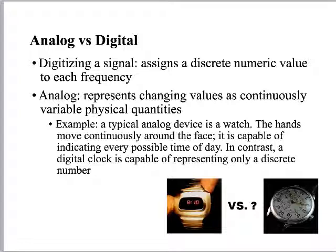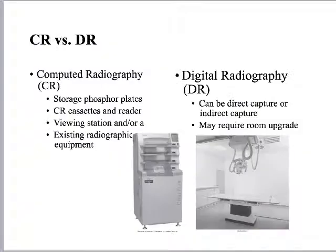Another way to think about digital versus analog: think about Daft Punk, a band that makes electronic music, versus Led Zeppelin, who would plug their guitars into their amps making analog music. There was nothing digitized in Led Zeppelin's music — whatever was coming out of their guitars was what people were hearing. That's an analog process. Versus Daft Punk, who plug their computers into their amplifiers and crunch numbers to produce sound.